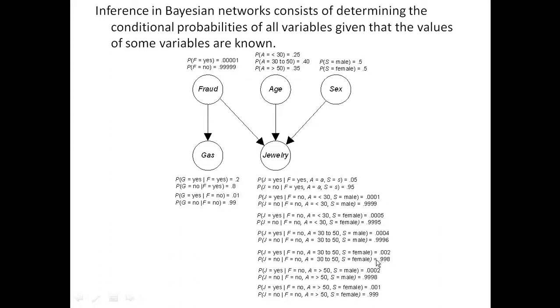Let's look at one of the bigger probabilities. If you're in this middle age group, and you're a female, the probability of buying jewelry is .002. That's pretty large, relative to the other values.